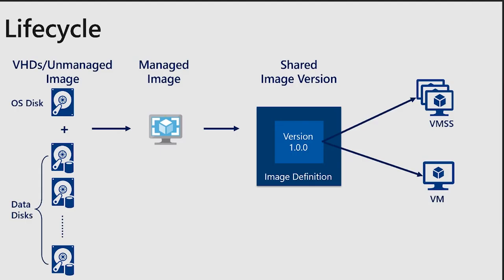How do you get to Shared Image Gallery? Looking at the history of Azure, everybody had an unmanaged image — just one OS disk plus a bunch of data disks, like VHDs that each had their own URIs. You have to convert that into a managed image, and then you can create a shared image version out of it, and then you can create a VM or VMSS — the actual instantiation.